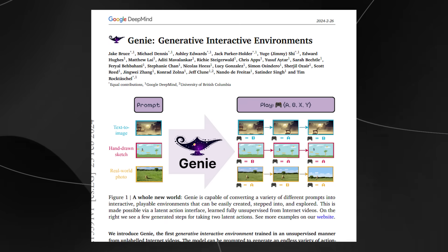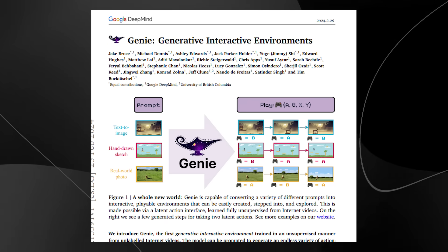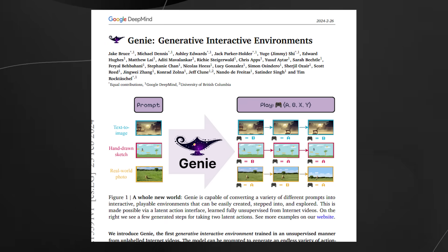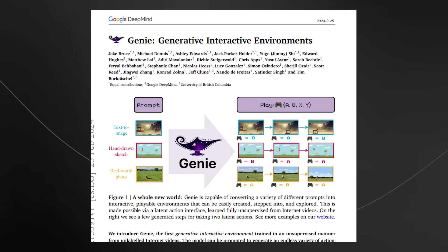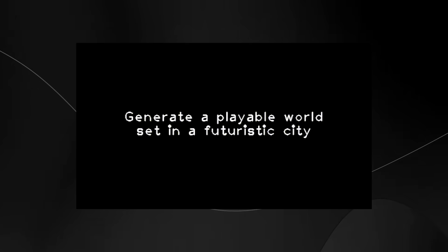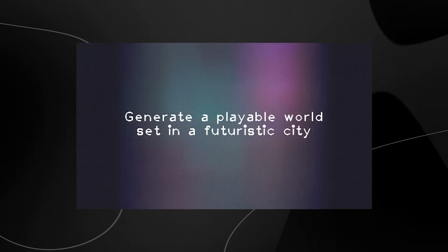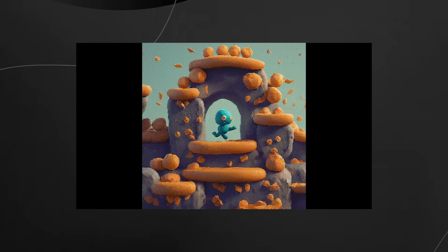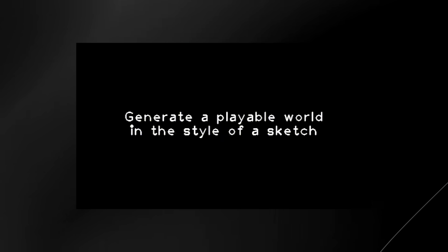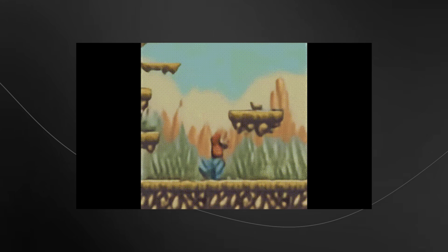This brings to mind earlier research from Google called Genie. Genie, developed by Google DeepMind, is a generative interactive environment. Imagine being able to create and explore entire virtual worlds just by giving simple prompts like text, images, or even sketches. Genie can take these inputs and generate interactive environments that users can control and explore frame by frame, quite similar to how one might play a video game — it's like a genie that can make a new world for you, hence the name.